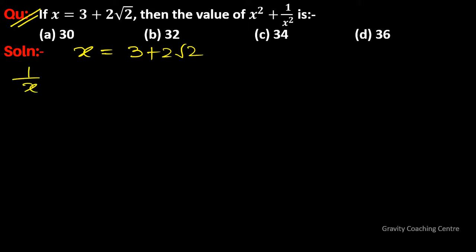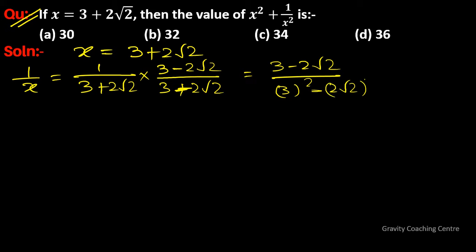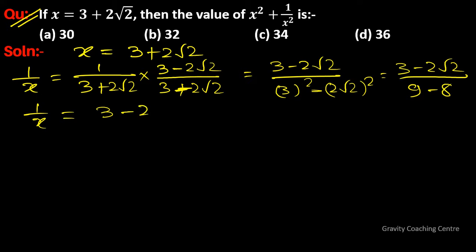1 upon x equals 1 upon (3 plus 2 root 2). Rationalizing the denominator, we multiply by (3 minus 2 root 2) upon (3 minus 2 root 2), giving 3 minus 2 root 2 upon (3 squared minus (2 root 2) squared), which is 3 minus 2 root 2 upon 9 minus 8. Therefore 1 upon x equals 3 minus 2 root 2.